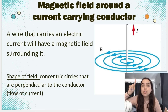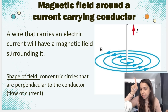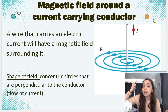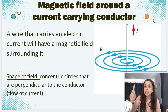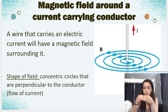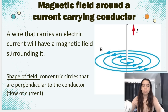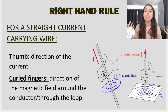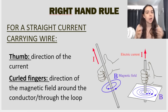If we have a straight current-carrying conductor, the shape of the magnetic field consists of concentric circles that are perpendicular to the conductor — basically perpendicular to the flow of current. You can see these concentric circles surrounding the wire.